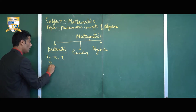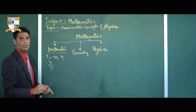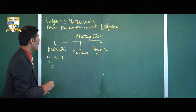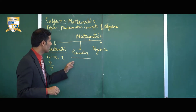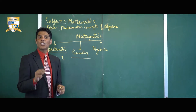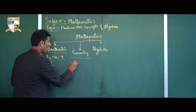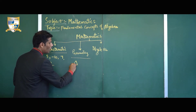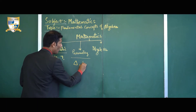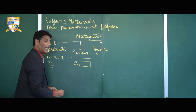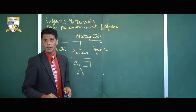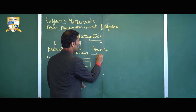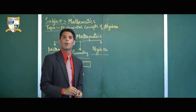Then comes geometry. Geometry is that branch of mathematics in which we study the shapes and sizes of different figures. For example, we learn about triangles, rectangles, and different 3D geometrical shapes like a cone.